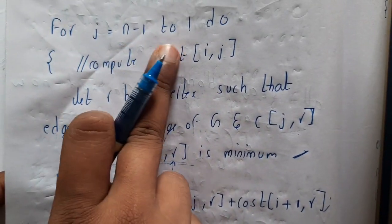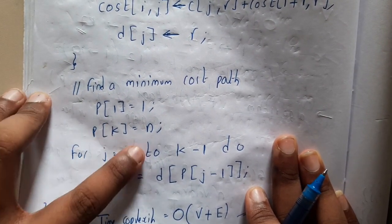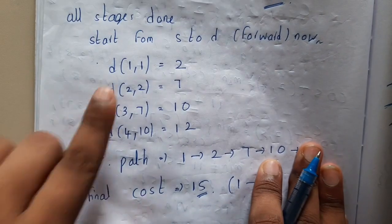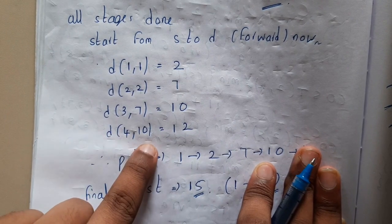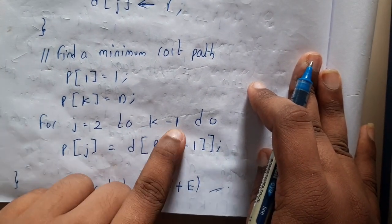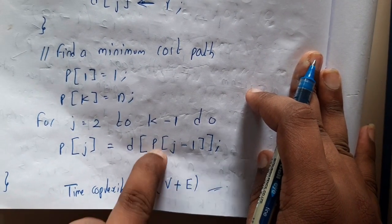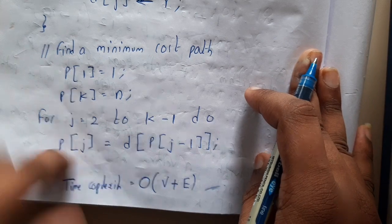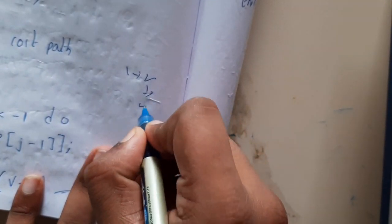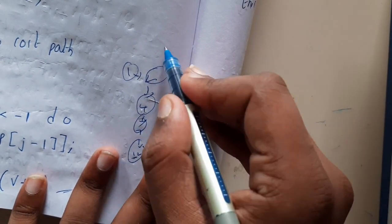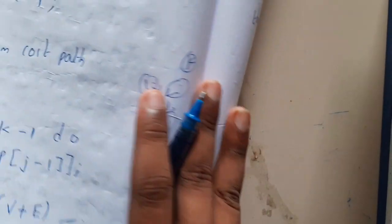Then update the path: D(j) = R. Once computation is done for each vertex, initialize P(1) = 1 and P(K) = N. For the forward path reconstruction, recall: D(1,1)=2, D(2,2)=7, D(3,7)=10, D(4,10)=12. These are what we get per stage. For j = 2 to K-1, set P(j) = D(P(j-1)). Indirectly, printing P gives the exact path: from 1 go to 2, from 2 go to 4, from 4 go to 7, from 7 go to 12. For a K-staged graph, P has K elements.